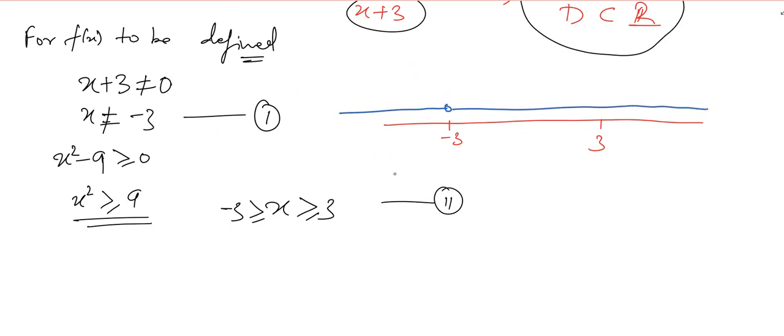Since there are two conditions, we have to take the domain as the intersection of these two conditions. We can't neglect any one of these conditions or constraints over the domain.